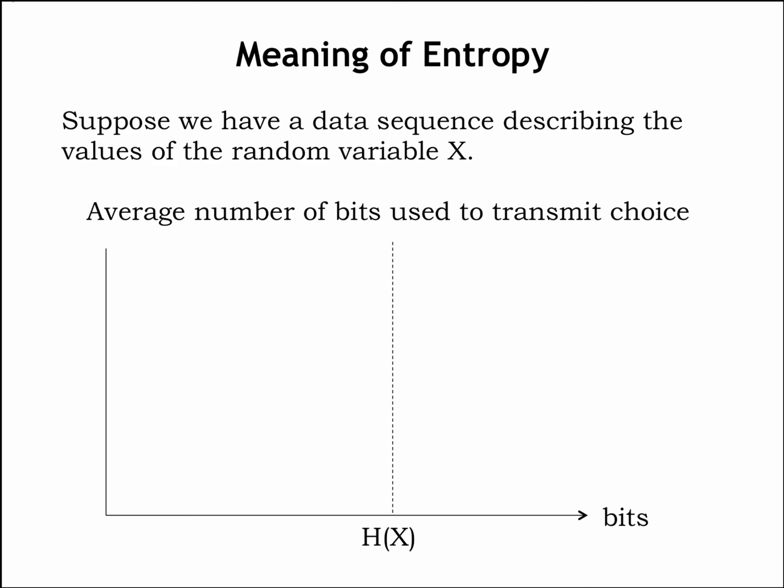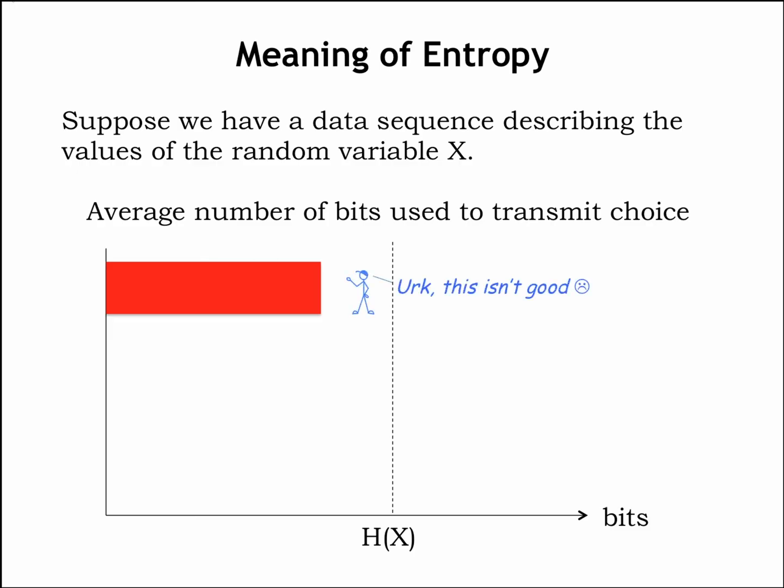So what is the entropy telling us? Suppose we have a sequence of data describing a sequence of values of the random variable x. If, on the average, we use less than H(x) bits to transmit each piece of information in the sequence, we will not be sending enough information to resolve the uncertainty about the values. In other words, the entropy is a lower bound on the number of bits we need to transmit. Getting less than this number of bits wouldn't be good if the goal was to unambiguously describe the sequence of values — we'd have failed at our job.